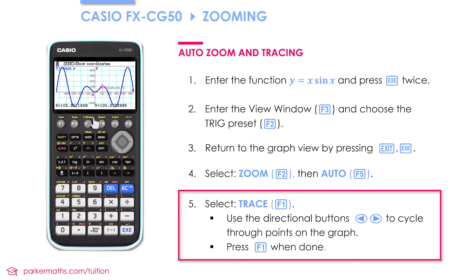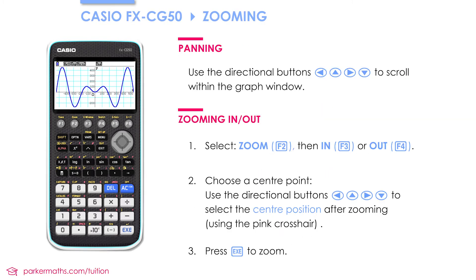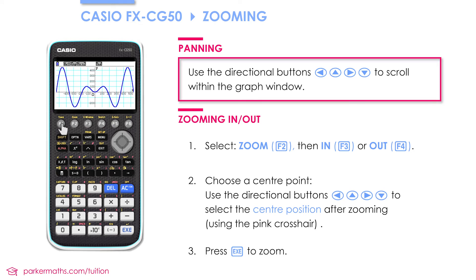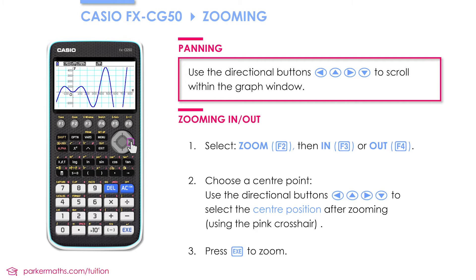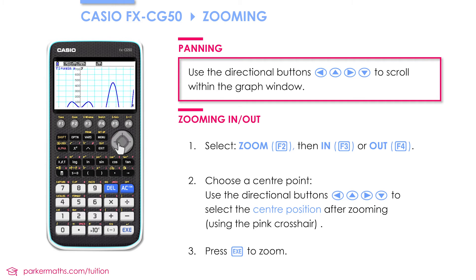When you've finished with the trace function press F1. Next we'll look at moving the graph window so you can see different parts of the graph. In graph view, if I don't have any of the functions selected and I press one of the directional arrows, I can move about and see different parts of the graph. This can be useful if you want to make slight adjustments to what you can see on the screen.